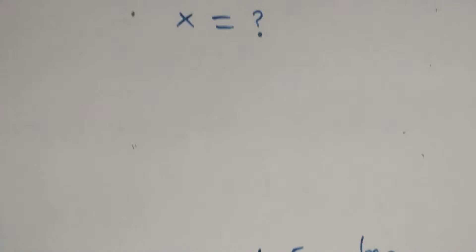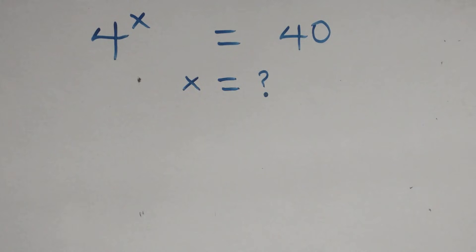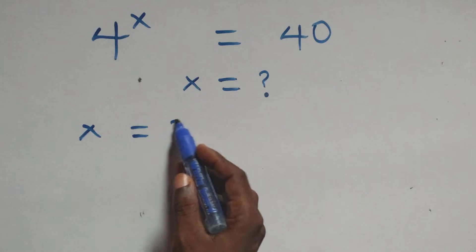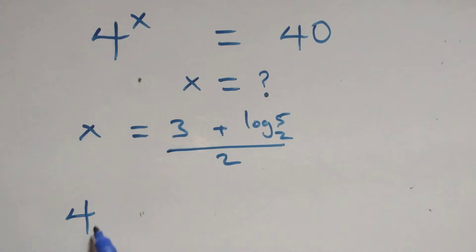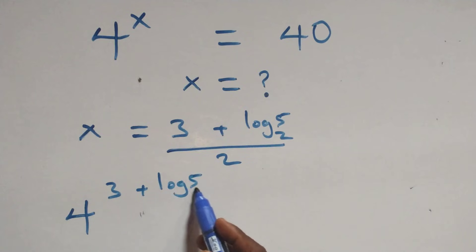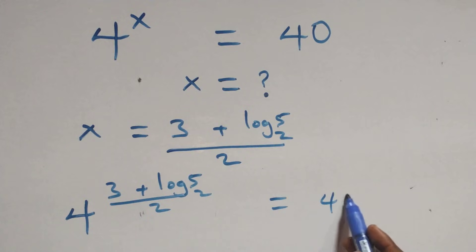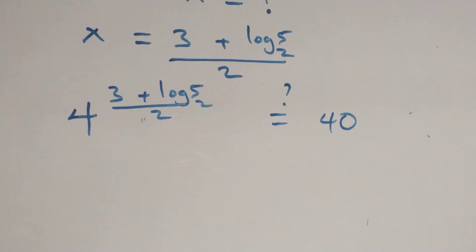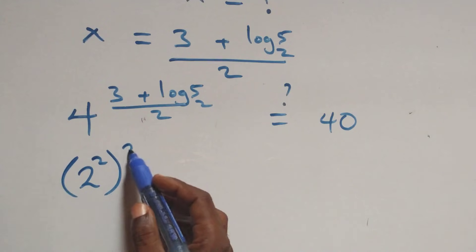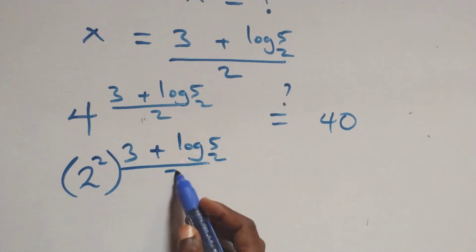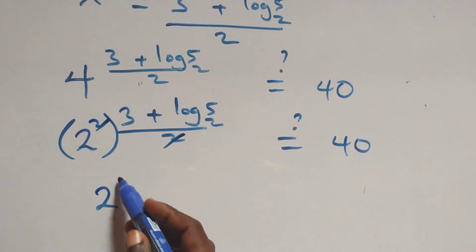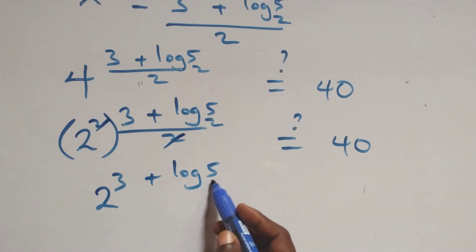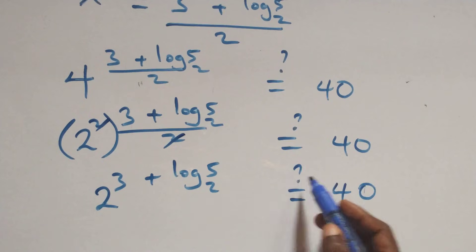Then let's check here if this satisfies the given problem. We substitute the value of x, which is x equals to (3 plus log 5 base 2) over 2. What we have becomes 4 raised to the power (3 plus log 5 base 2) over 2 is equal to 40. Then this power multiplies and here we have 2 raised to the power 3 plus log 5 base 2 is equal to 40.